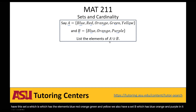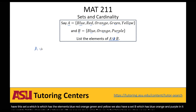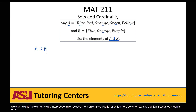We want to list the elements of A union B. So U is for union here. When we say A union B, what we mean is that we want to form a joint set which has all of the elements of both A and B in it.